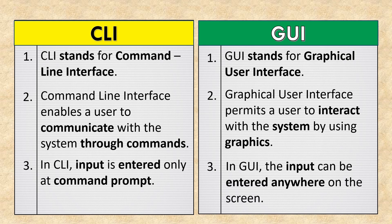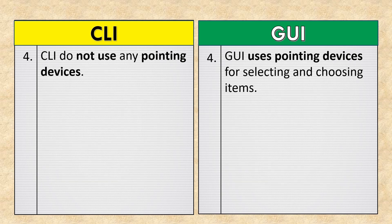In CLI, input is entered only at the command prompt. In GUI, the input can be entered anywhere on the screen. CLI does not use any pointing devices, whereas GUI uses pointing devices for selecting and choosing items.